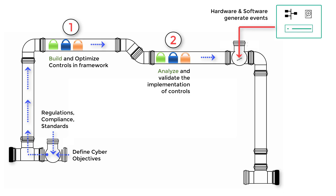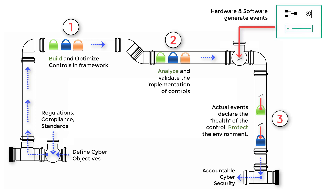The third and final step is to add accountability to the controls you've built — this is where continuous monitoring comes in. We usually build controls anyway; you're going to have to write out those controls and their implementation somewhere, whether in a Word document or Excel spreadsheet. So if you're going to put forth that effort, you might as well put them into a framework that allows you to do continuous monitoring as a natural next step.